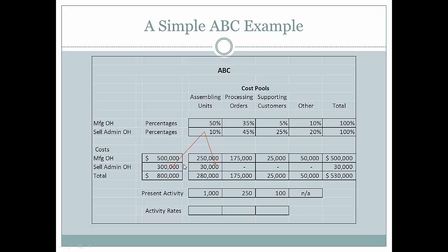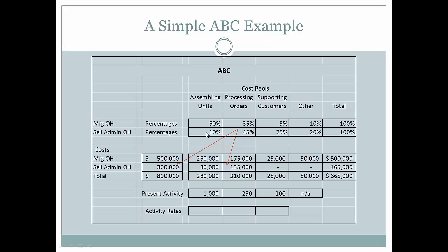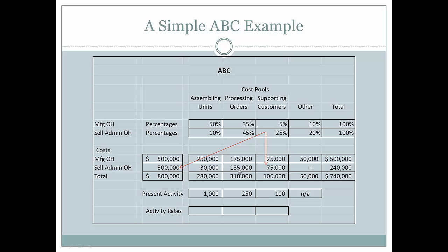Doing the same for selling and administrative overhead — it makes sense that a small percentage would be spent on assembling units, more on processing orders, and a lot of time on supporting customers, and other. For selling and administrative, the 'other' category may include C-suite salaries for the CFO, chief executive officer, chief financial officer, etc. We want to make certain the totals agree, then add up the cost pools: assembling units 280,000; processing orders 310,000; supporting customers 100,000; and organizational sustaining activities 110,000.